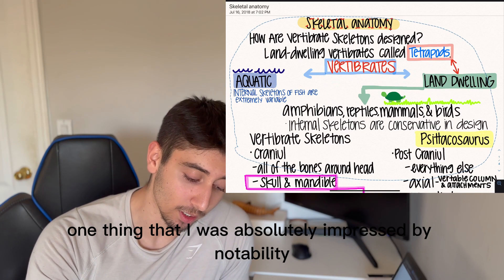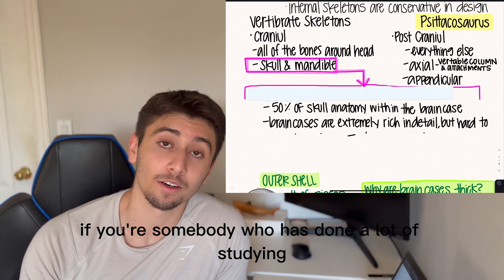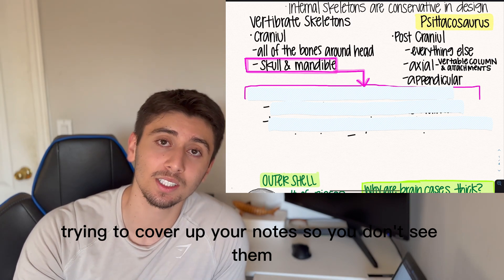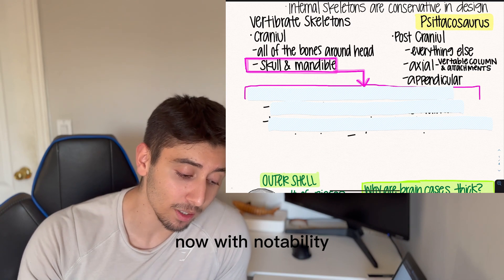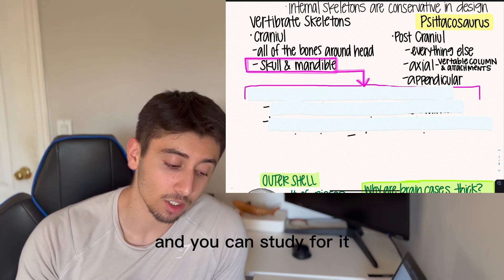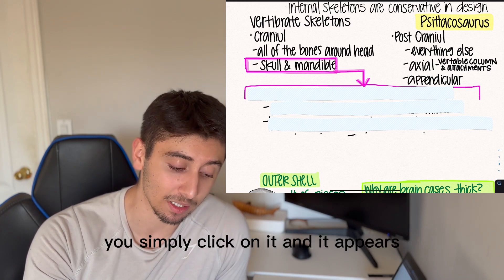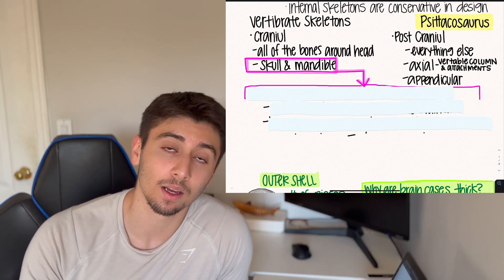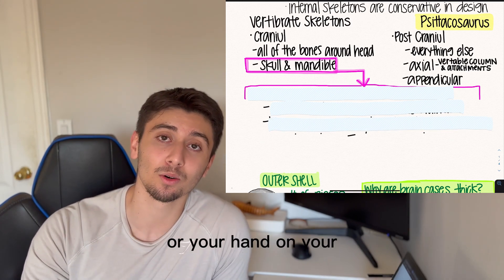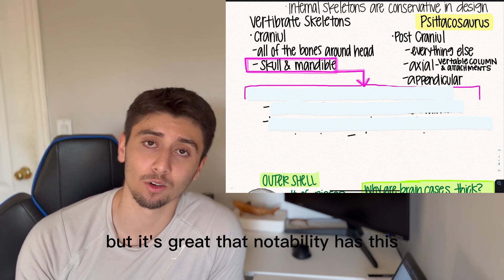One thing that absolutely impressed me about Notability, which I don't believe other applications have, is something called a tape. If you're somebody who has done a lot of studying in topics like chemistry and biology, you know it's a huge challenge trying to cover up your notes so you don't see them when studying. With Notability, they've provided a tape feature where you cover up your notes, and when you're ready, you simply click on it and it appears, then disappears again. This is an extremely useful tool — I haven't seen it on other note-taking apps.